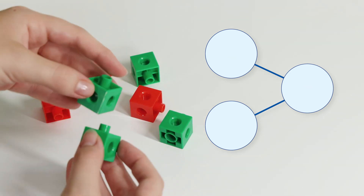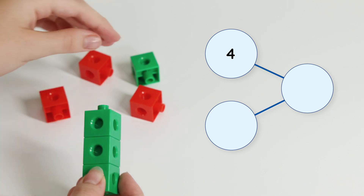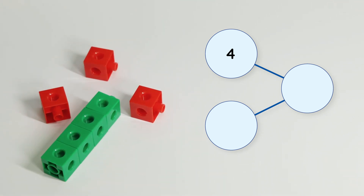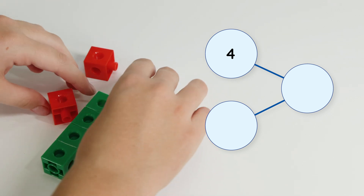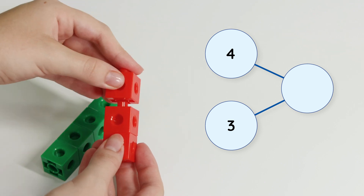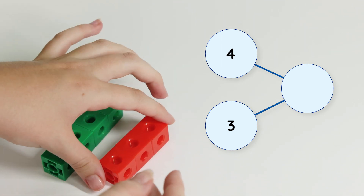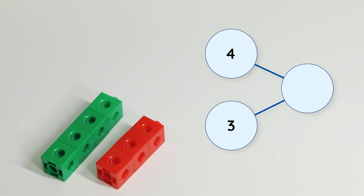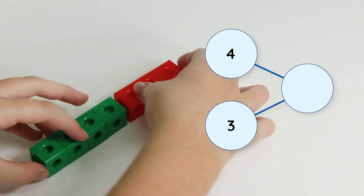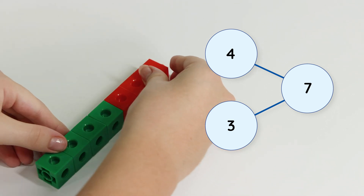Let's make another number bond. We have four green cubes and three red cubes. Four and three make seven. There are seven cubes in all.